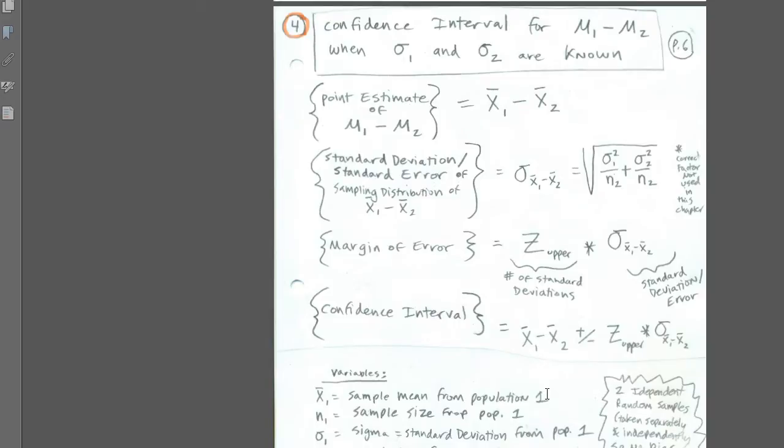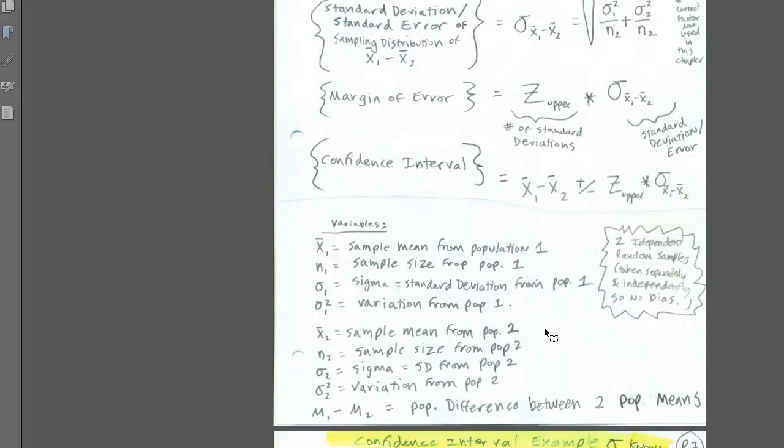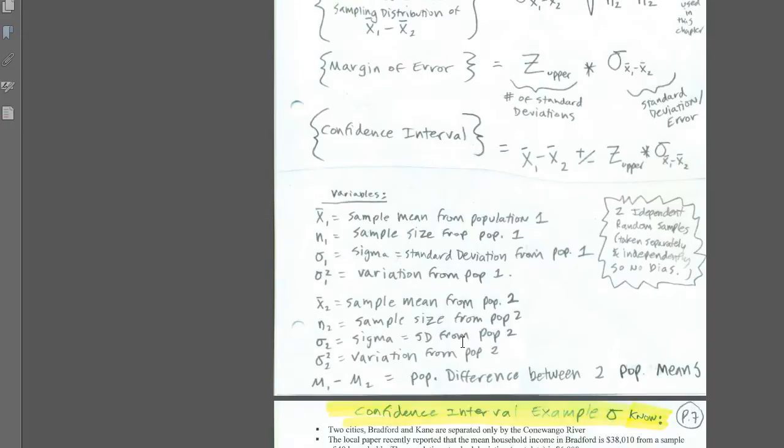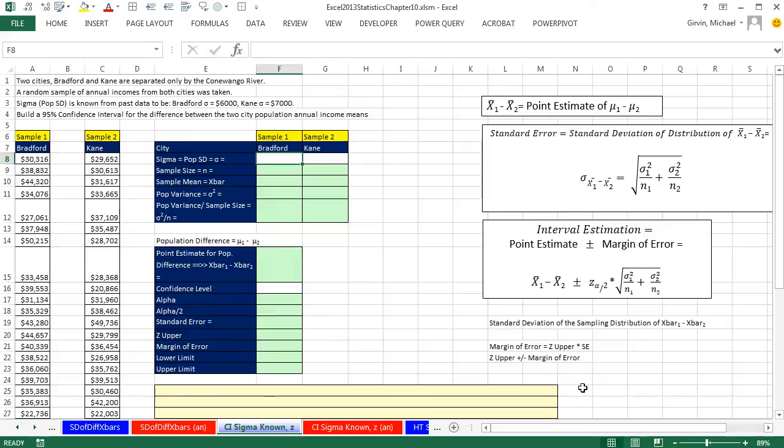z times our standard deviation, that will give us our margin of error. And then our confidence interval is our point estimate, the difference, plus or minus the margin of error. This is over in the PDFs. There's a bunch of defined variables here. But let's go over to Excel.